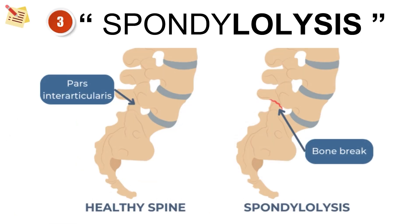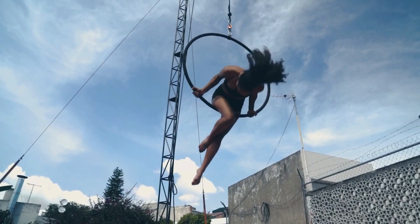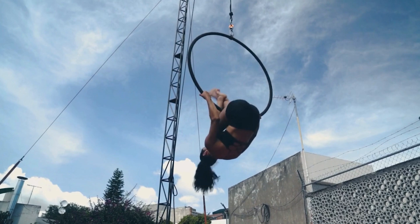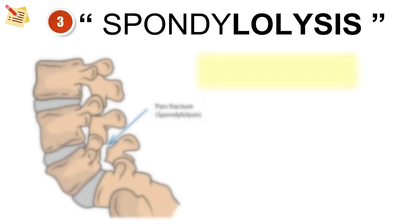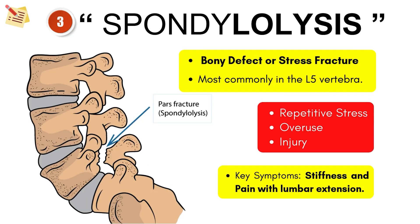Now spondylolysis. This is a bony defect or a stress fracture in the pars interarticularis, most commonly in the fifth lumbar vertebra. It's often seen in young athletes involved in hyperextension sports, and also happens due to repetitive stress and overuse. Key symptoms are pain with lumbar extension movement and stiffness.